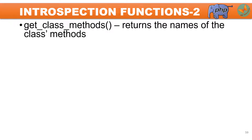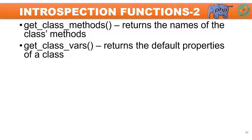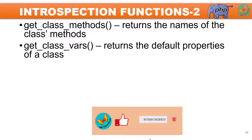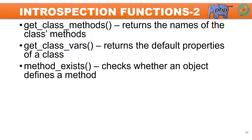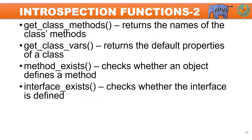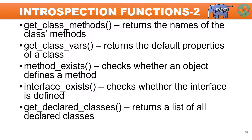In the last tutorial we saw four introspection methods. In this tutorial we are going to see some more. The first is get_class_methods, which returns the names of the class methods declared in the current class. Second is get_class_vars, which returns the default properties of the class. Third is method_exists, which checks whether a particular method exists or not. Fourth is interface_exists, which checks whether a given interface exists or not. And the last is get_declared_classes, which returns a list of all declared classes, including system-defined and user-defined classes.